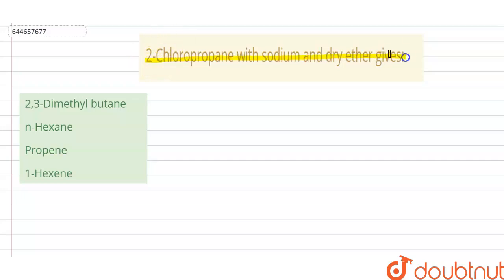Two-chloropropane with sodium and dry ether gives. First of all, we have to know what is the Wurtz mechanism in order to solve this question.